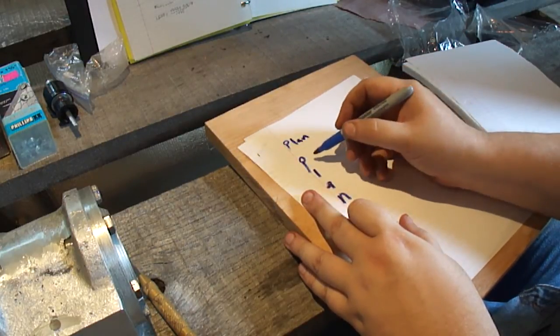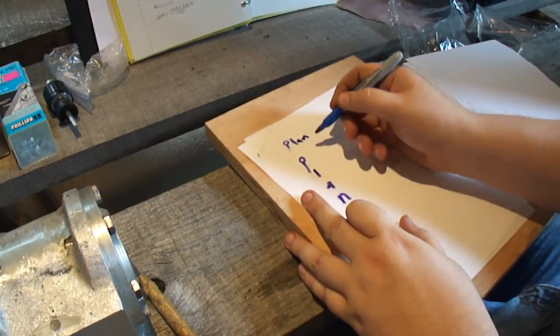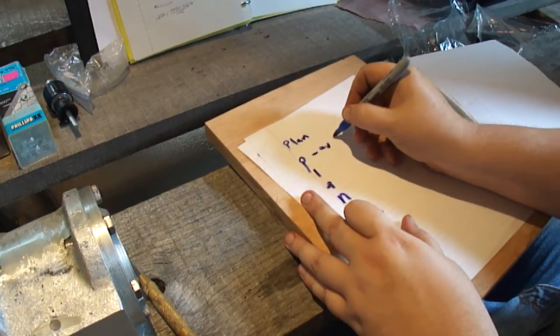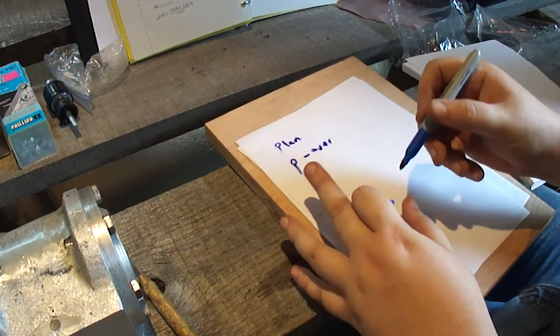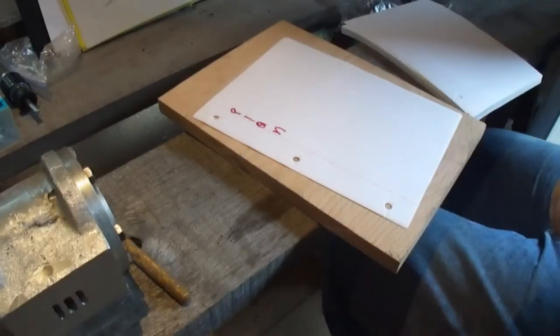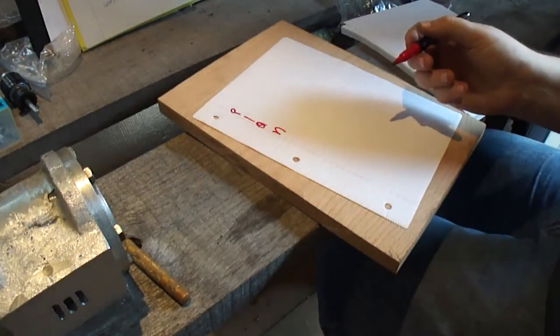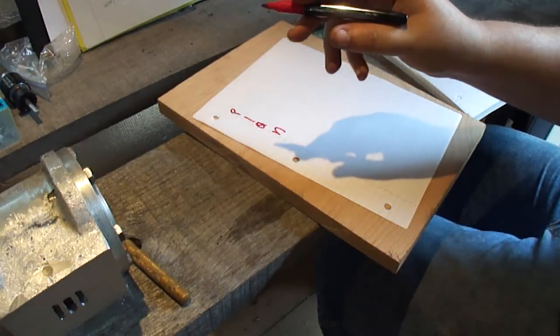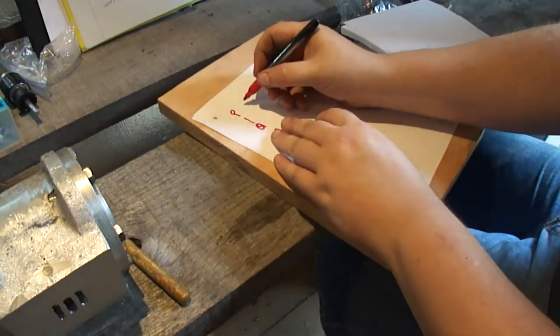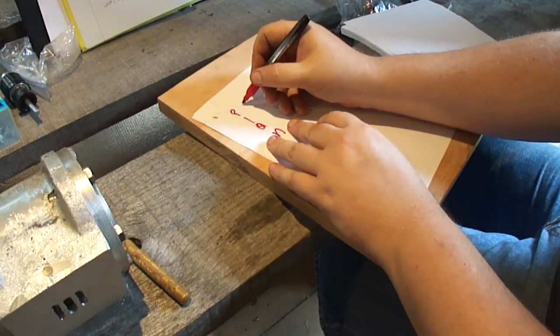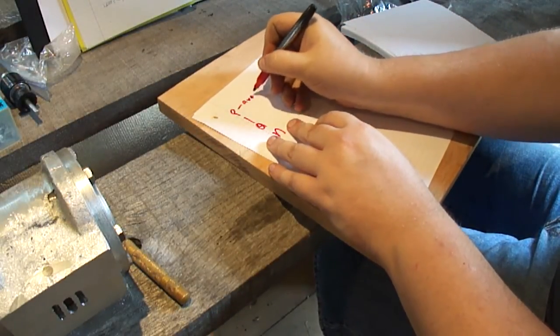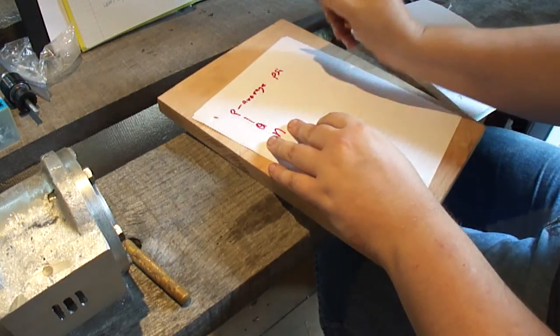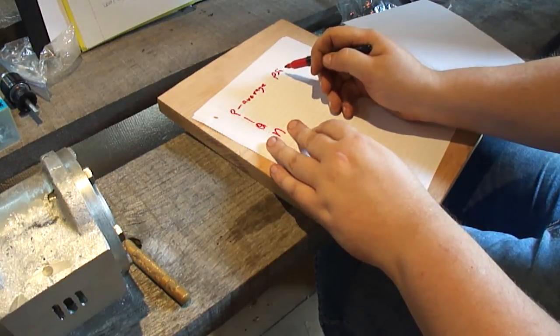P for pressure, the PSI or the average PSI that's going into the cylinder. Let me get a better marker. Sharpies not good for much of anything anymore. I just get BIC ones. The P is for pressure, the average pressure inside the cylinder.